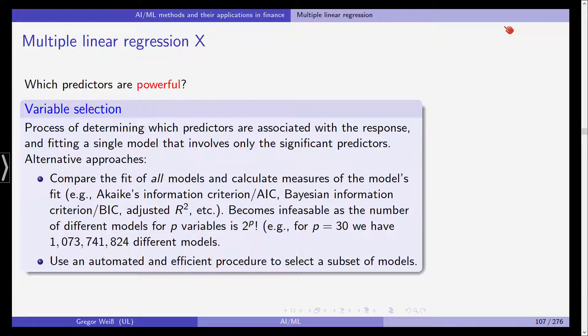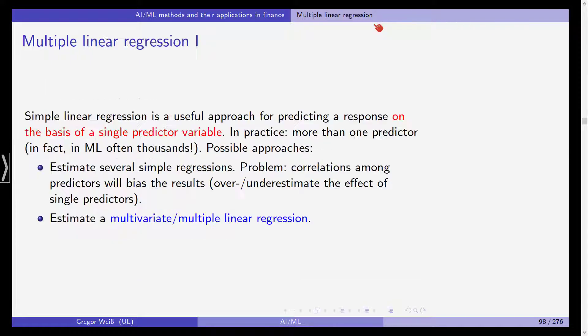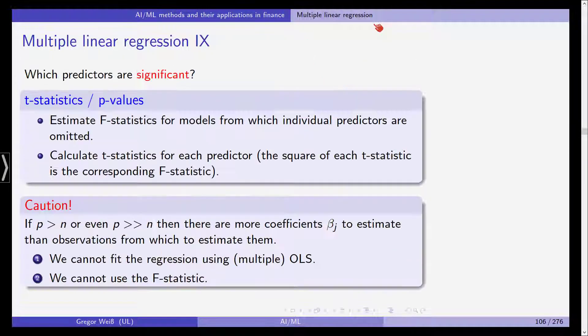So if we only had 30 variables, 30 predictors, we would get close to 1 billion different models so you will not be able to do this, especially when you have thousands of variables. So what we need to do is we need an automated and efficient procedure to select a subset of models and there are three classical approaches for variable selection.